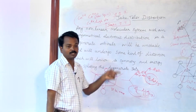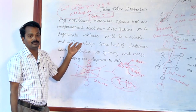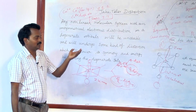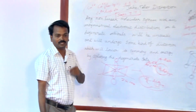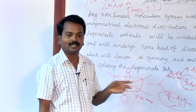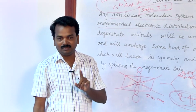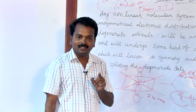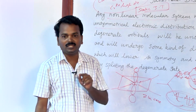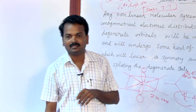Static Jahn-Teller distortion has many applications, especially in ESR spectroscopy and in predicting the G value — whether it is a higher G value or lower G value. My dear students, that is what Jahn-Teller distortion is about. If the system is improper, then the electronic distribution will also be found to be unsymmetrical. That is what Jahn-Teller distortion is. Thank you.